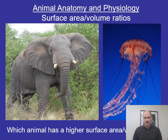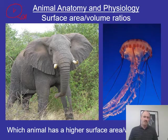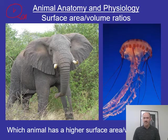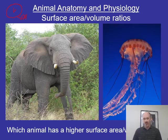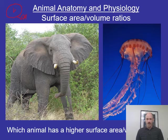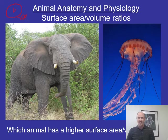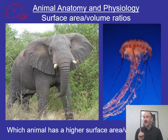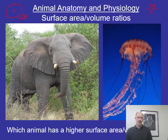This slide asks which of these two creatures has the highest surface area to volume ratio. For a spherical organism, the outer edge is the surface area — how much edge there is — and the volume is the inside space. Think about the skin of the elephant versus its volume, and the outer edge of this jellyfish compared to its volume. The important thing is the ratio between the two — surface area over volume.